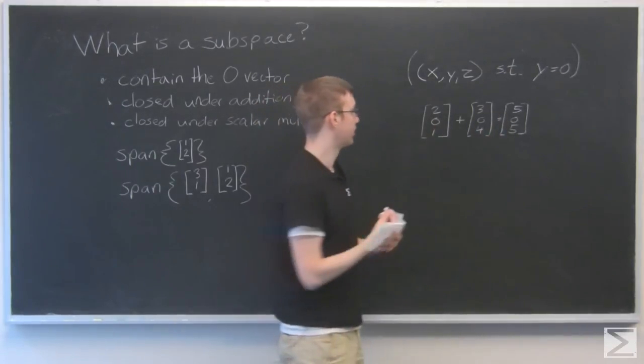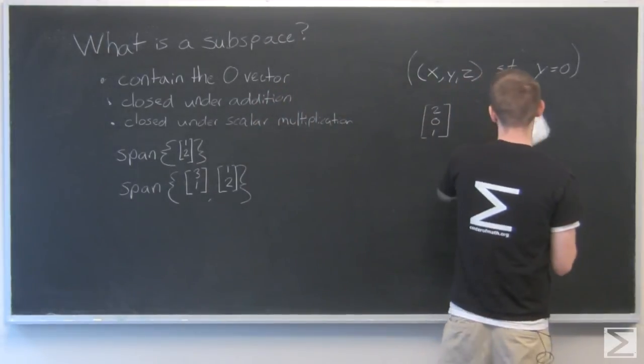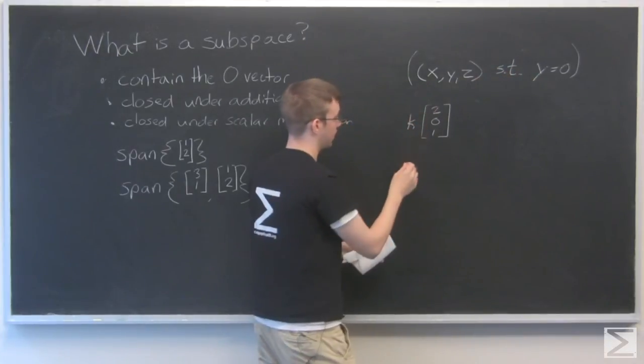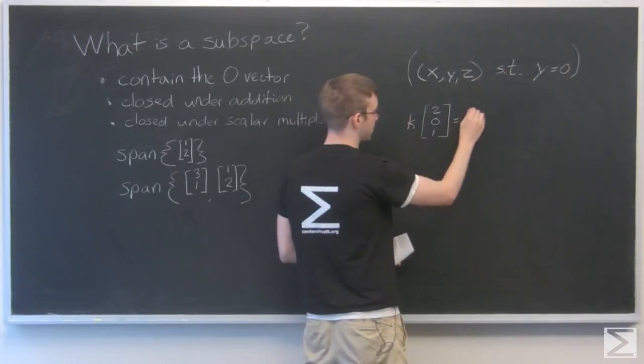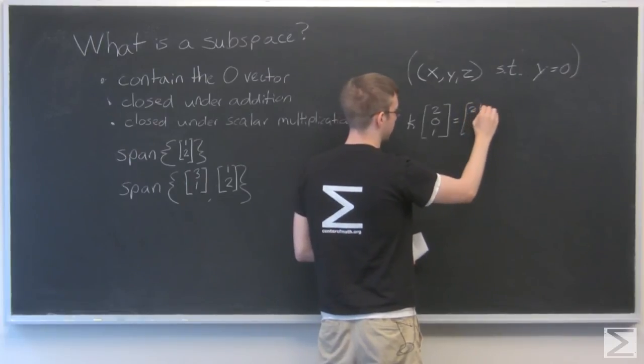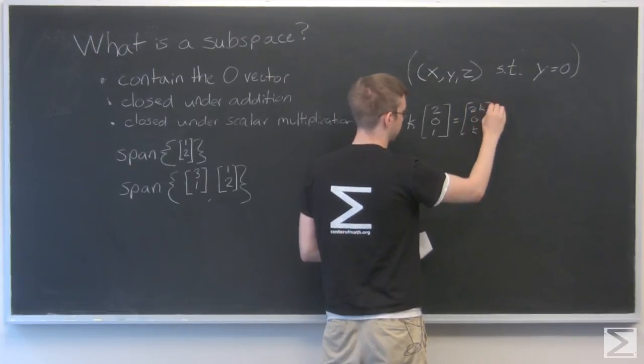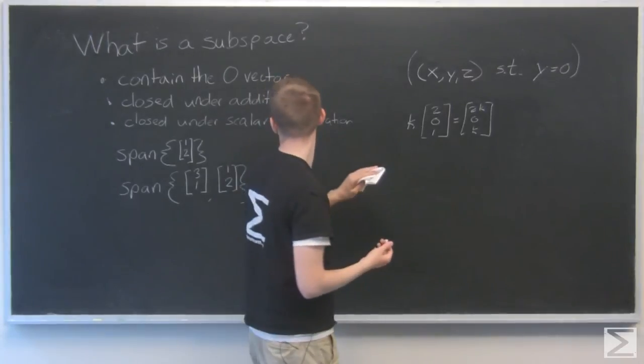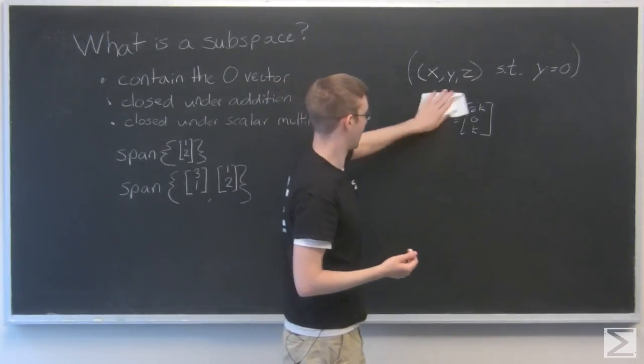And similarly, no matter what constant I choose to put in front of this vector, y is always going to stay 0. So this is closed under scalar multiplication as well.